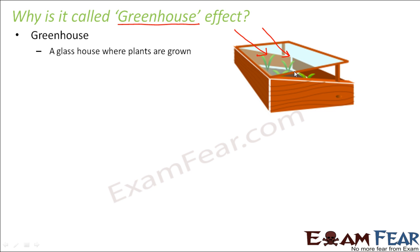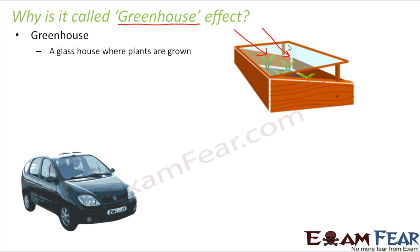Now you can see how this relates to the greenhouse effect — here also, radiations are allowed to enter inside but are not allowed to reflect back, so they are trapped inside and the temperature increases. A similar example is your car. If you park your car in the sun with all the doors and windows closed and come back after an hour, you feel it is boiling hot inside. That is because solar radiation is allowed to enter through the glass but is not allowed to come out, so it gets trapped inside the car.